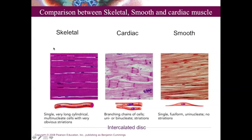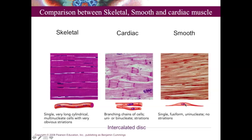Histologically, skeletal muscle fibers are long and cylindrical, multinucleated because they are formed by fusion of many cells, with visible striations. Cardiac muscle has faint striations, intercalated discs, and a branching pattern. Smooth muscle cells are fusiform, non-striated, and single-nucleated.